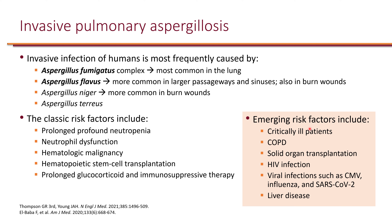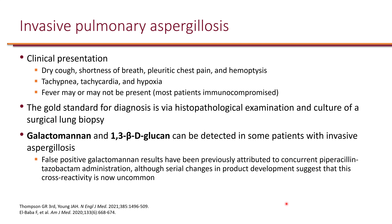Emerging risk factors include critically ill patients or anyone in the ICU, COPD, solid organ transplantation, HIV infection, and viral co-infection such as CMV, influenza, and most recently SARS-CoV-2, and of course liver disease. Symptoms of pulmonary aspergillosis include dry cough, shortness of breath, chest pain, and hemoptysis. Patients can be pretty ill with tachypnea, tachycardia, and hypoxia.